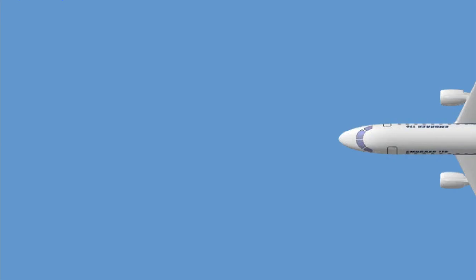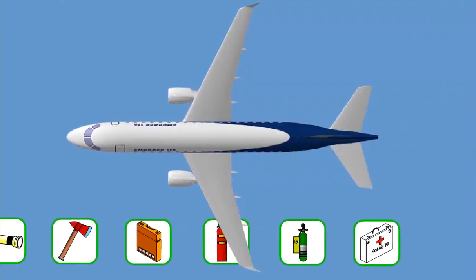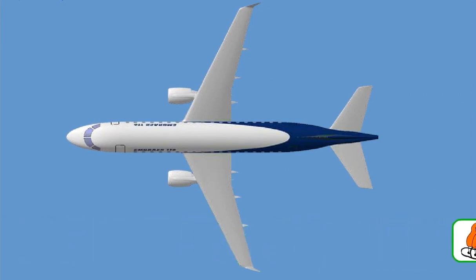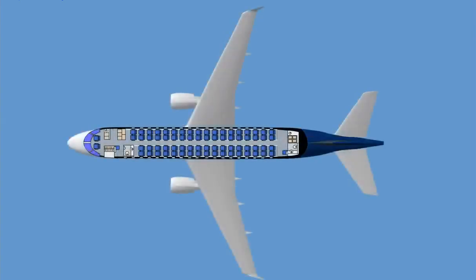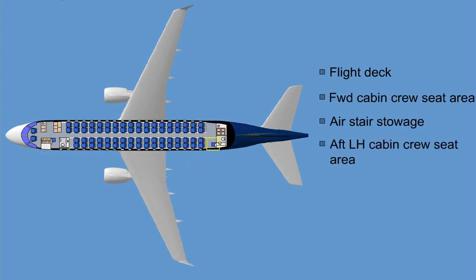The Embraer 170 is equipped with standard safety items readily available for use in an emergency situation. The location of the equipment must be known by each cabin crew member. The basic version of the Embraer 170 has the following safety equipment stations: the flight deck, the forward cabin crew seat area, the air stair stowage, the aft left-hand cabin crew seat area, and the left and right-hand bulkheads.